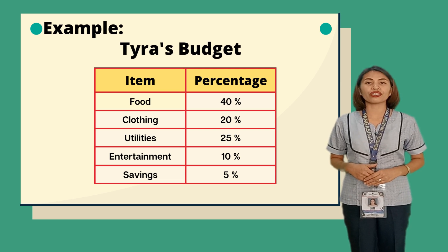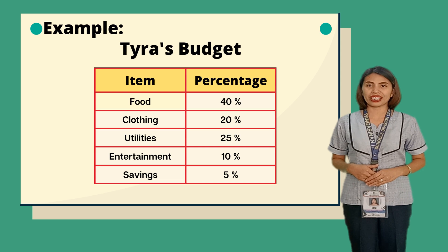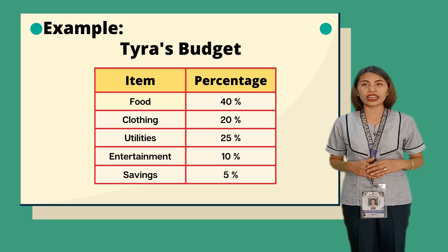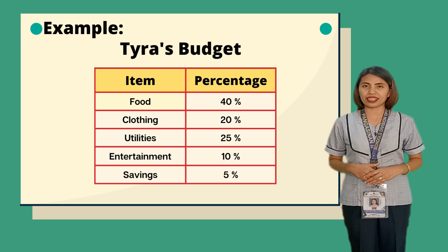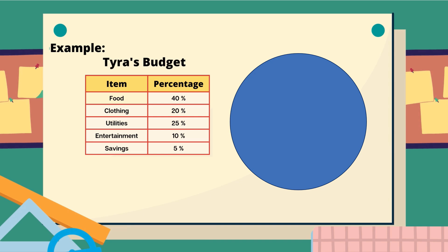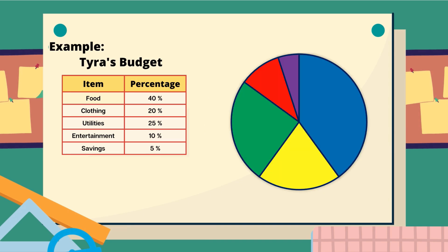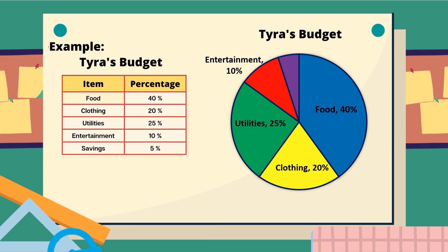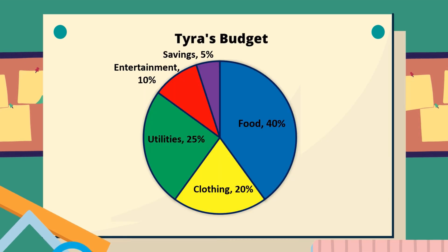Let us try this example. The table shows how Tyra spends each part of her budget. To construct a pie chart, we divide the circle according to the percentage given by each sector: 40% for food, 20% for clothing, 25% for utilities, 10% for entertainment, and 5% for savings. And here is the pie chart of Tyra's budget.